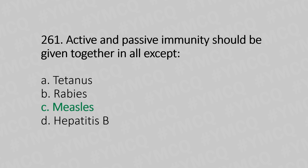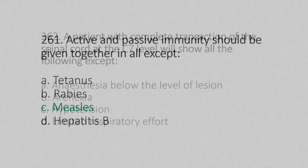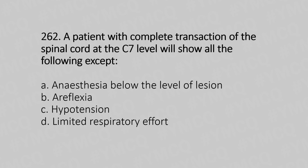Now let's move to question number 262. A patient with complete transection of the spinal cord at C7 level will show all of the following except: Option A, Anesthesia below the level of lesion; Option B, Areflexia; Option C, Hypotension; Option D, Limited Respiratory Effort. And the answer is Option D, Limited Respiratory Effort.